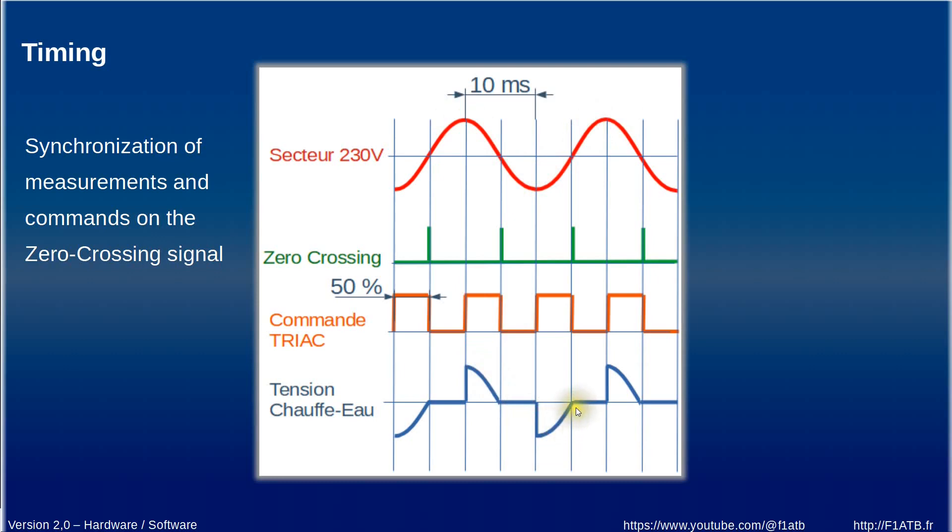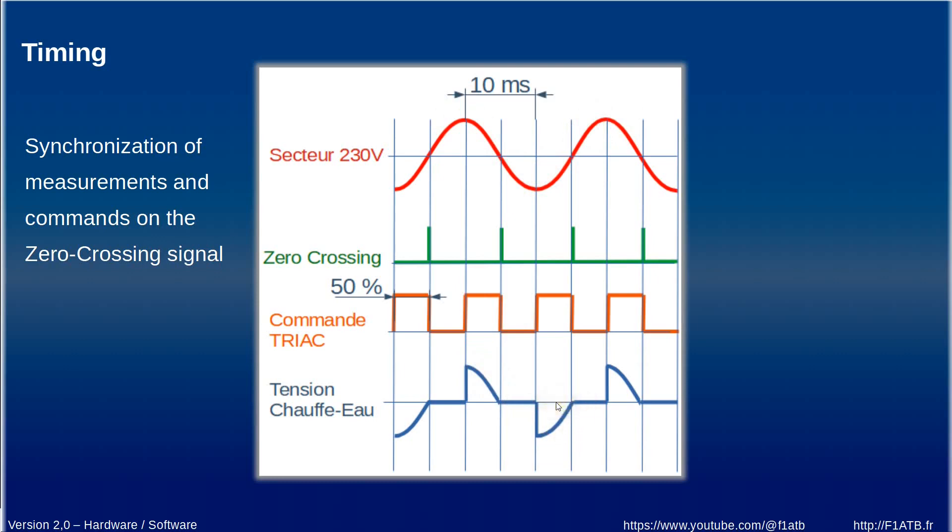here's the hardware it's a complete hardware so you can see it's quite simple. You have the power supply for the ESP32 it's a 5 volt one amp we have the transformer 230 volt to 6 volt the dimmer here and the ESP32. The transformer is connected here by the two green wires